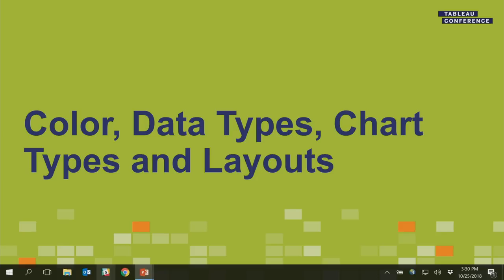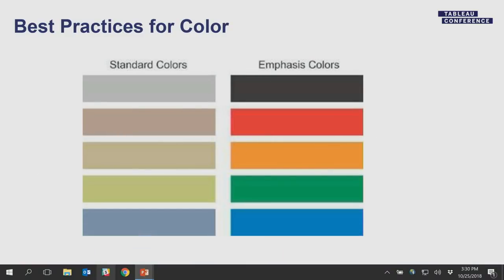Let's get into some finer detail around color, data types, chart types, and layouts. Tableau comes with many color templates — two general types: muted or standard colors, and emphasis colors. I caution you against using emphasis colors. Colors mean different things to different people, especially across countries. In the United States, red means bad and green means good, but in China, red means good fortune. So they're going to take something very different away from that.